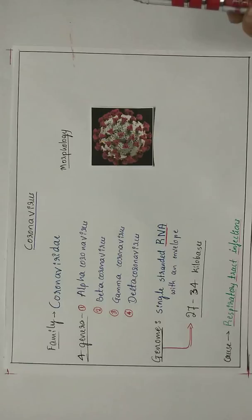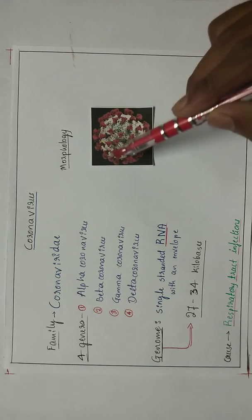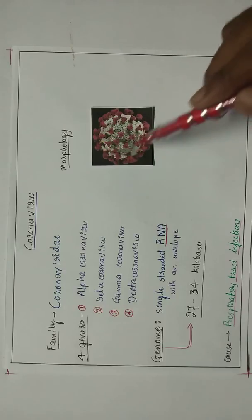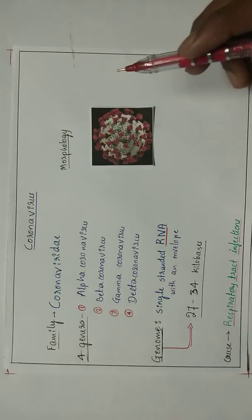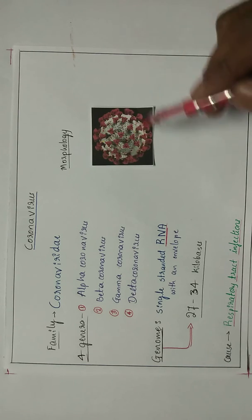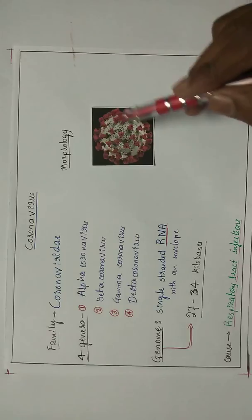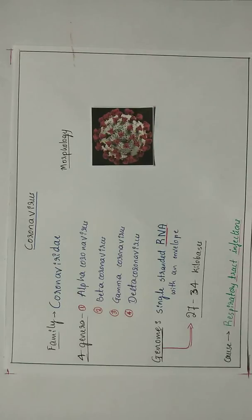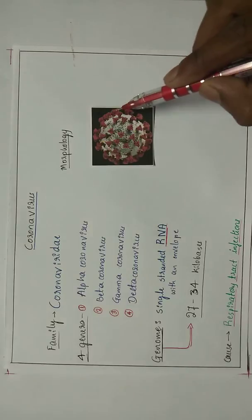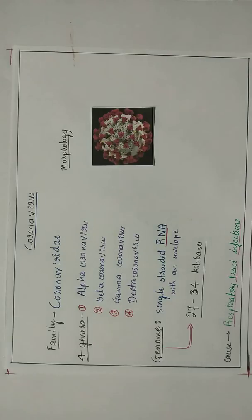Coming to the morphology of the corona, it contains many of the club-shaped viral spikes which are known as peplomers. Whatever the red colored spikes we see, they are actually the spikes. Those spikes help to bind the receptors of human cells.